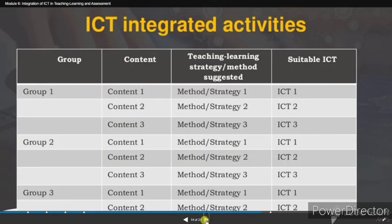For ICT integrated activities, there are three groups — Group One, Group Two, and Group Three — each with corresponding content (Content One, Content Two, Content Three). The teaching-learning strategy method suggested maps to Method One (Strategy One), Method Two (Strategy Two), and so on. The suitable ICT tools are then assigned accordingly to each group and content combination.